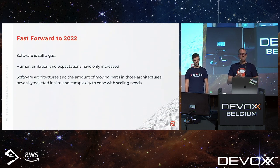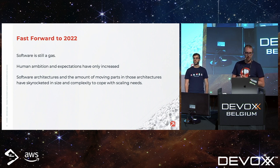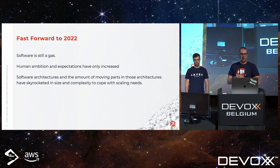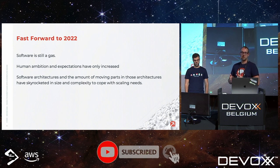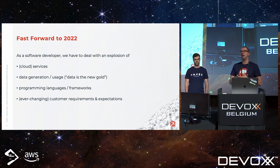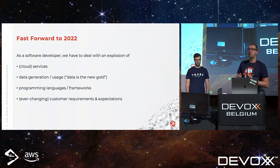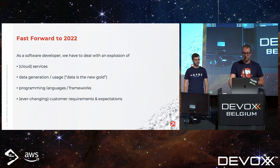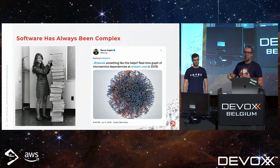Fast forward to today — software is indeed still a gas. It will expand in any dimension. Human and customer ambition and expectations are skyrocketing. Software architectures have become really complex with lots of moving parts. As a developer today you have to deal with tens if not hundreds of internal and external APIs, data generated every second, programming languages, and frameworks — plus ever-changing customer requirements.